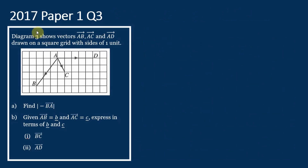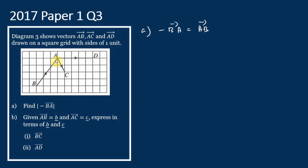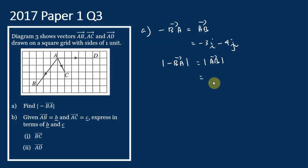Now let's see this question — past exam 2017, Paper 1, Question 3. Diagram 3 shows vectors AB, AC, and AD drawn on a square grid with size one unit. Question (a): find the magnitude of negative BA. Negative BA equals AB. From the diagram, AB = −3i − 4j. The magnitude of negative BA equals the magnitude of AB = √((-3)² + (-4)²) = 5 units.